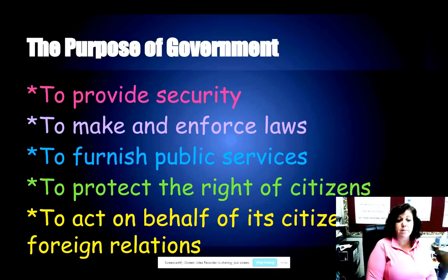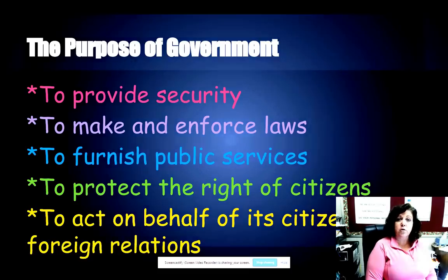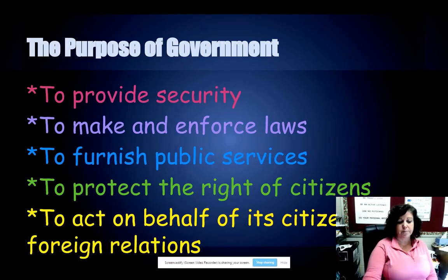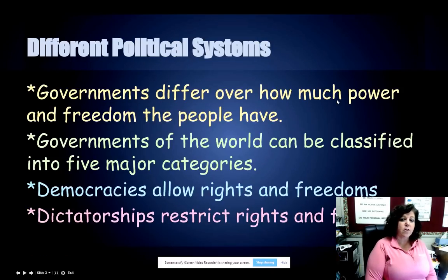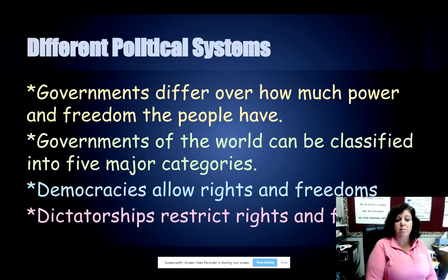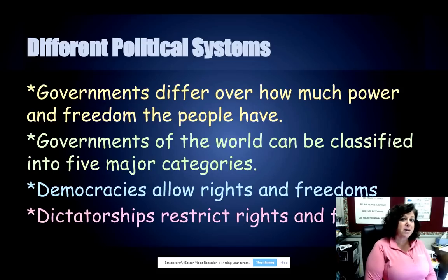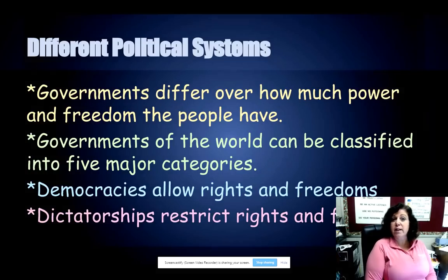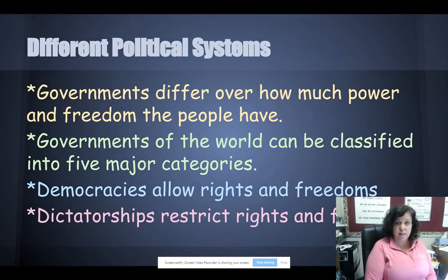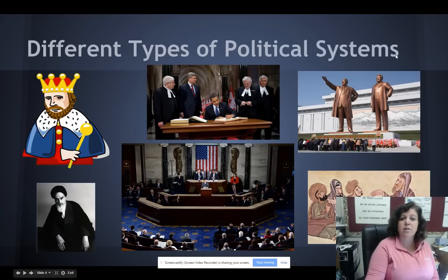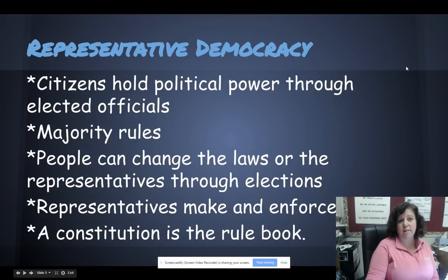We have different types of government — some are controlled by a few people, some by a single person, and in some governments they're controlled by all of the people. Governments differ over how much power and freedom the people of that country have. Governments of the world can be classified in five major categories — you might want to be taking notes on our PowerPoint, there could be a quiz. Democracies allow rights and freedoms, where dictatorships restrict the rights and freedoms of citizens.